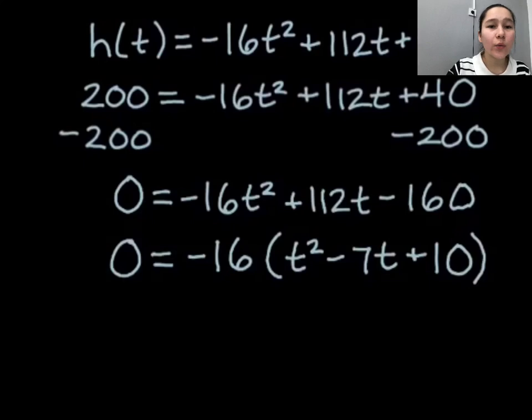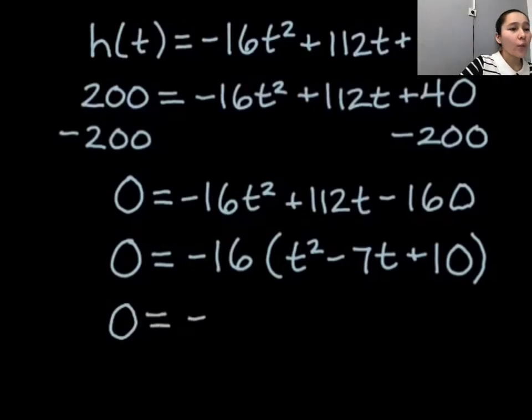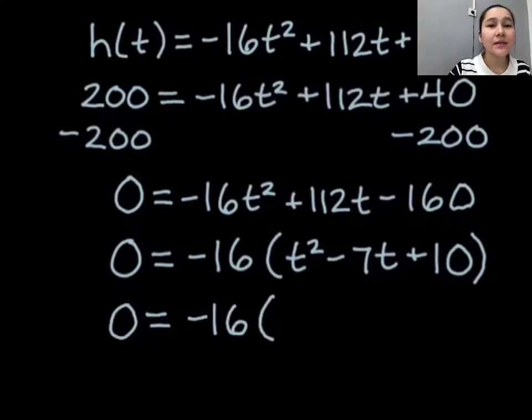Again a much nicer kind of thing to actually factor. Looking at this, we want two numbers that multiply to positive 10 but add up to negative 7. The two that are going to work are negative 2 and negative 5. So I get 0 equals negative 16 times t minus 2 times t minus 5.